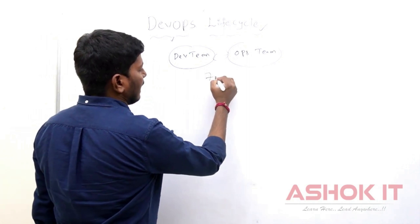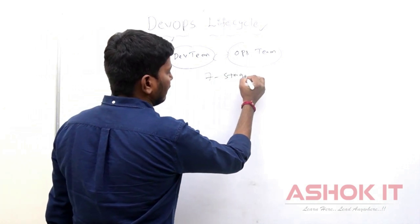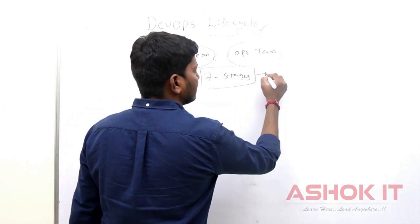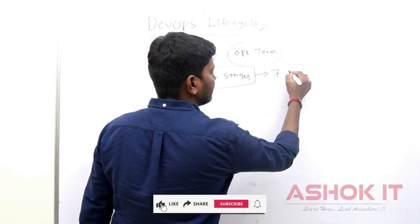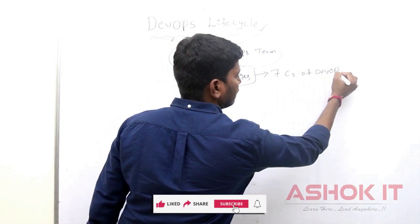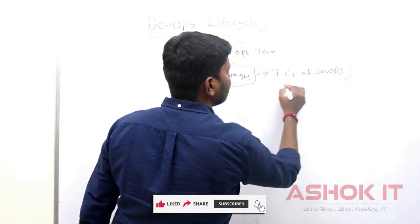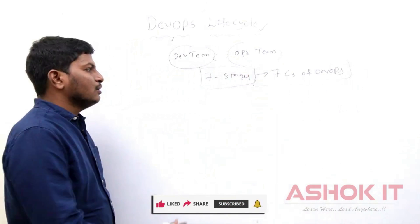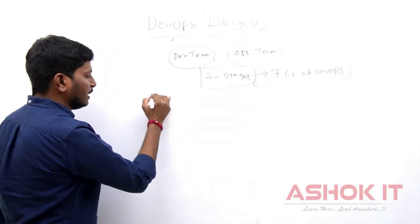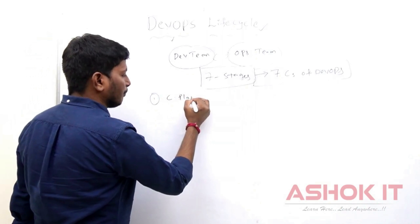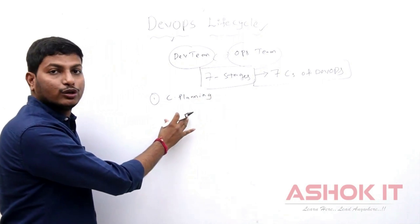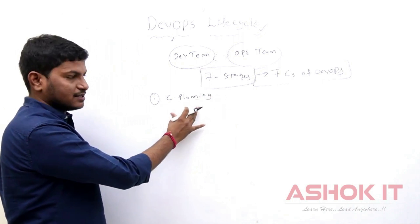Here we can see there are 7 stages available in our DevOps lifecycle. Those 7 stages we can also call as the 7 Cs of DevOps. So, what are those 7 stages or 7 Cs?